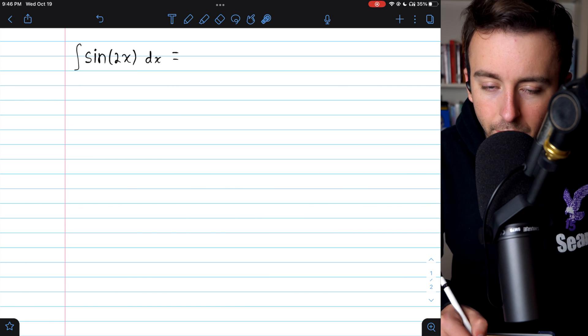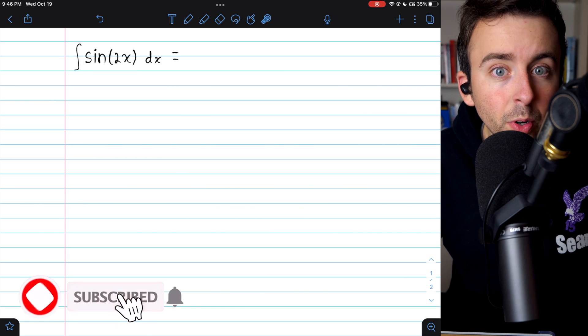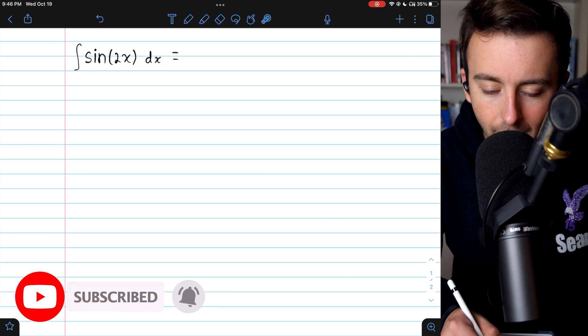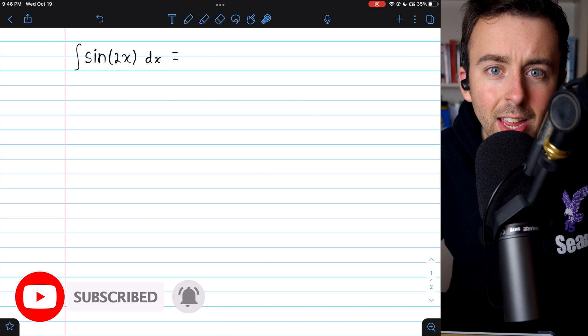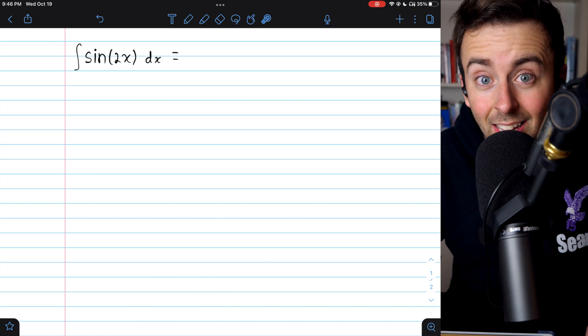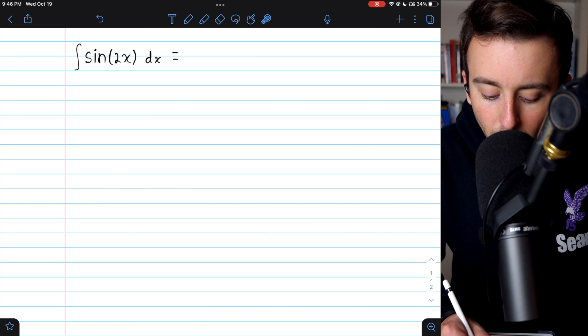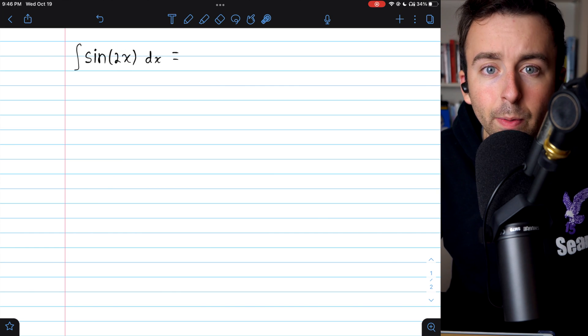We're going to evaluate the integral of sine of 2x. Of course, we know that the integral of sine is negative cosine. The only thing that's making this slightly non-trivial is that we have a 2x inside of our sine function.